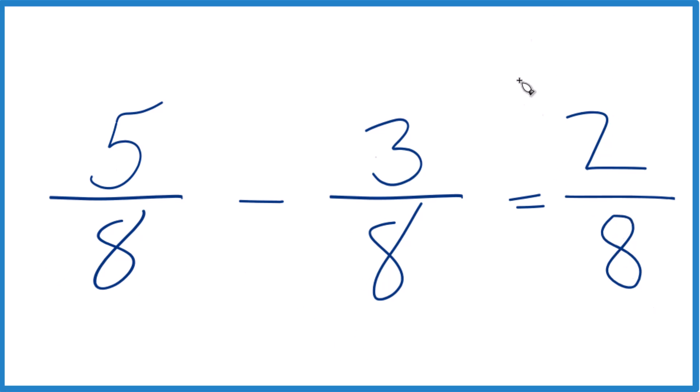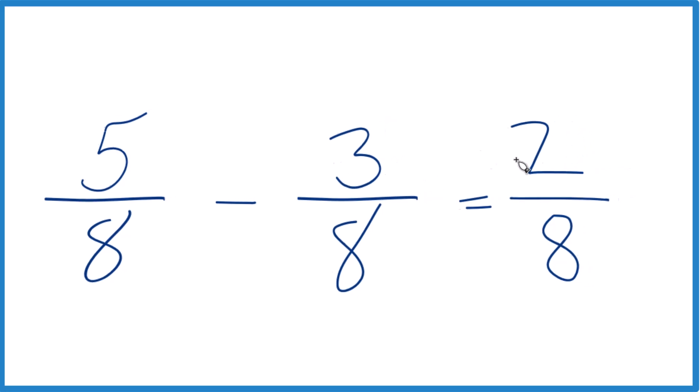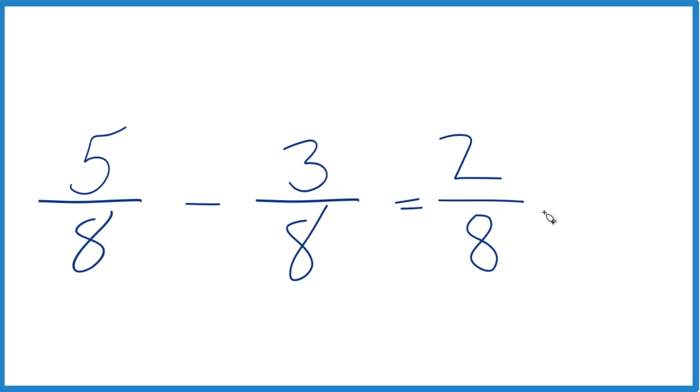2 eighths, that is the answer to 5 eighths minus 3 eighths, but we could simplify it. 2 goes into 2 one time, and 2 goes into 8 four times. So we could also say that 2 eighths, that's an equivalent fraction for 1 fourth, and we simplified it down to lowest terms.